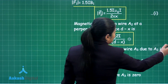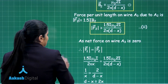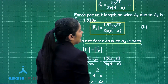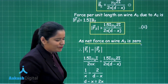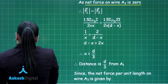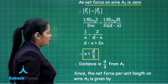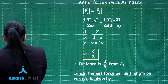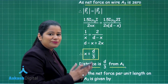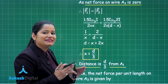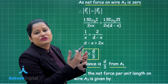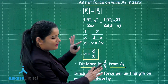As per this question, we set F1 equal to F2 because the net force on wire A3 must be zero. When we equate the two expressions and solve, x comes out to be equal to d/3. This means that at a distance of d/3 from A1, the force experienced by wire A3 will be zero.